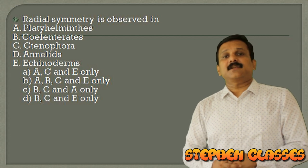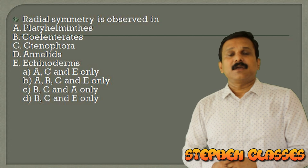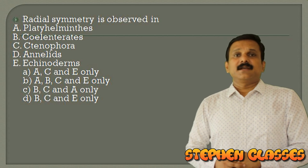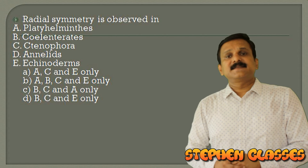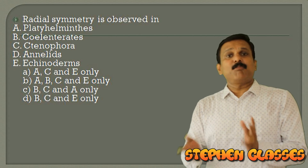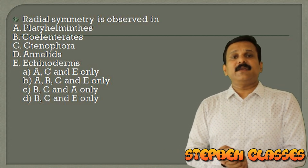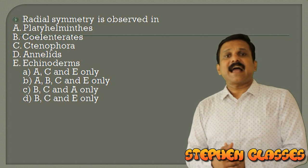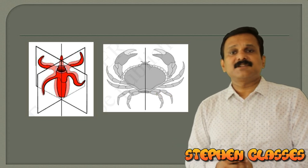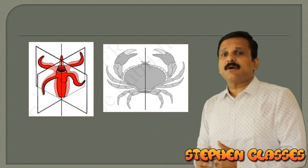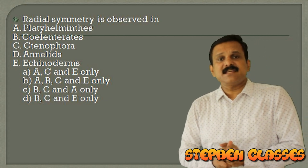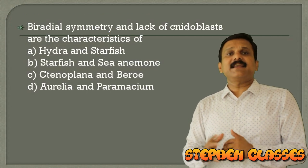Radial symmetry is observed in: regarding symmetry, Cnidarians and Ctenophores have radial symmetry. Echinoderms — adults are radially symmetrical but larvae are bilaterally symmetrical. A picture showing radial symmetry and one showing bilateral symmetry (crab) are shown. The correct answer is option D: B, C, and E.